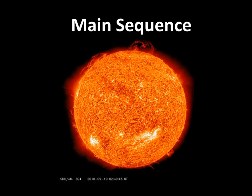In a main sequence star, there is massive gravity holding the gas in, but the gas is also superheated and wants to expand out. So these two forces are in opposite directions, and in the main sequence star those two forces are in balance.